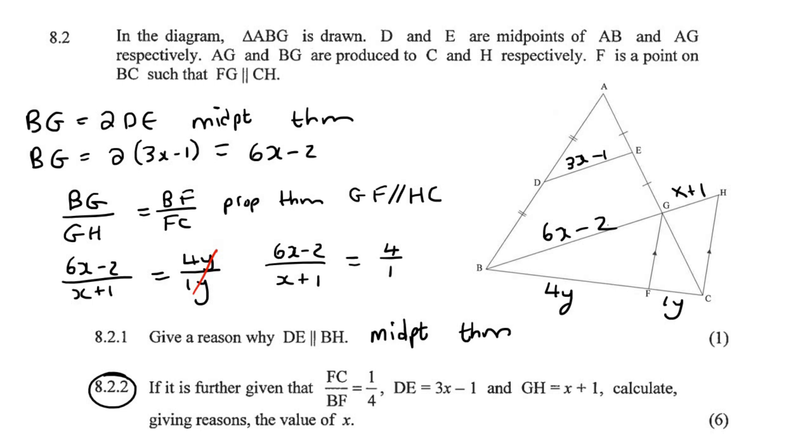Then if we cross-multiply, you end up with 6X minus 2 equals to 4 times X plus 1, and then that will be 6X minus 2 equals to 4X plus 4. Solve. 2X will be 6. Therefore, X will be 3.